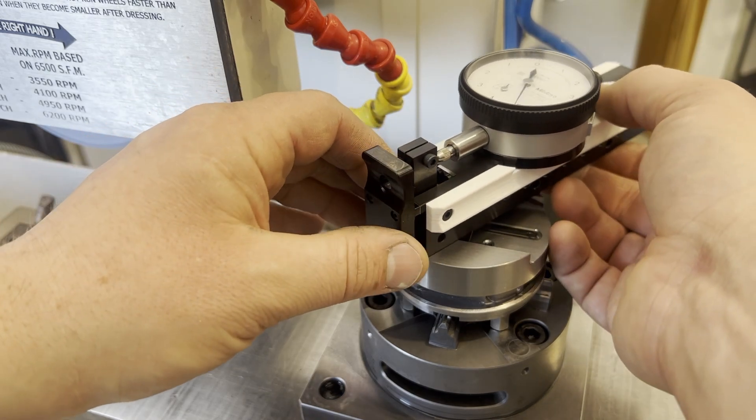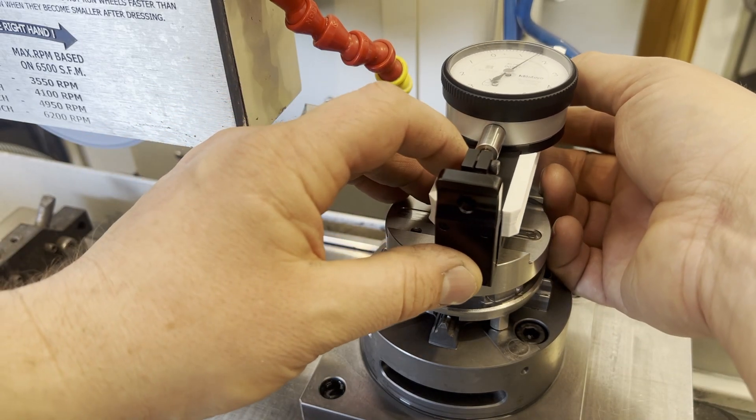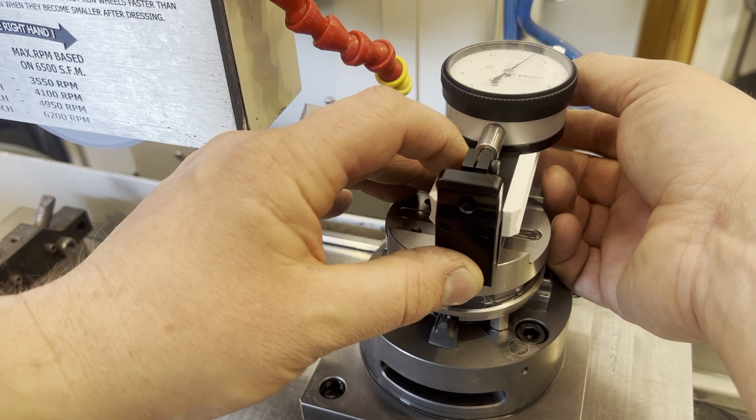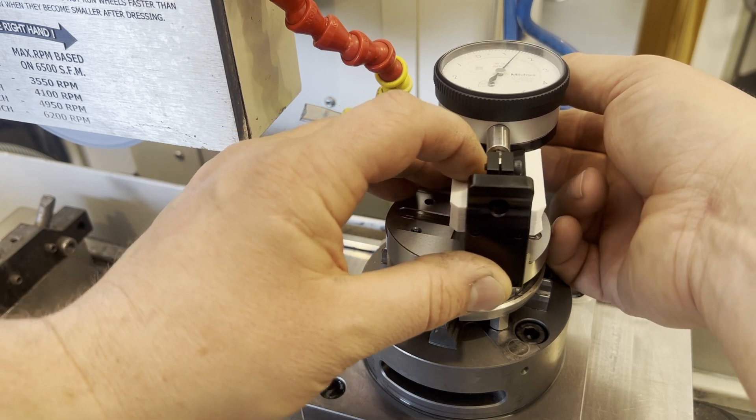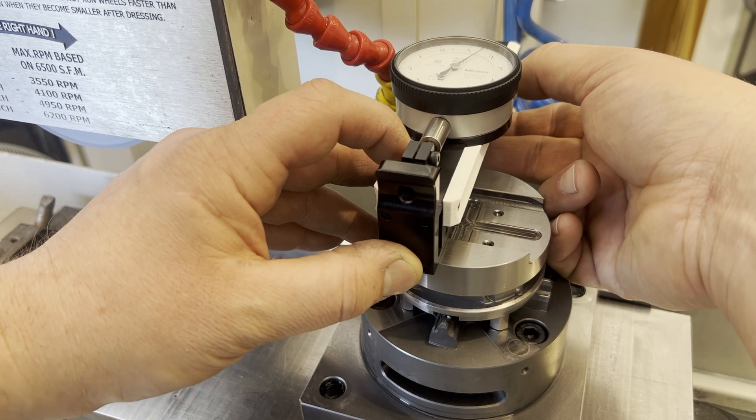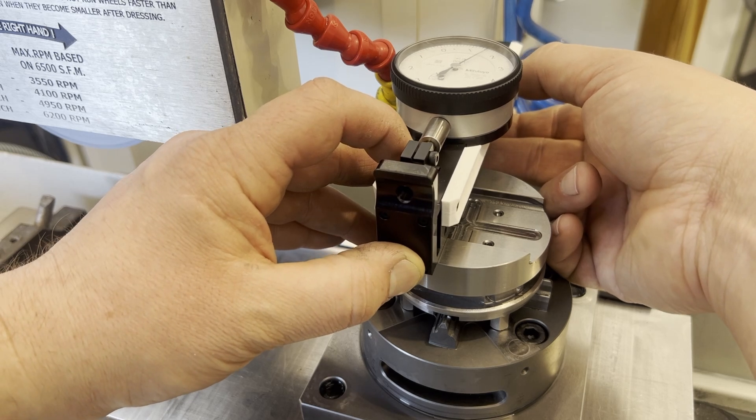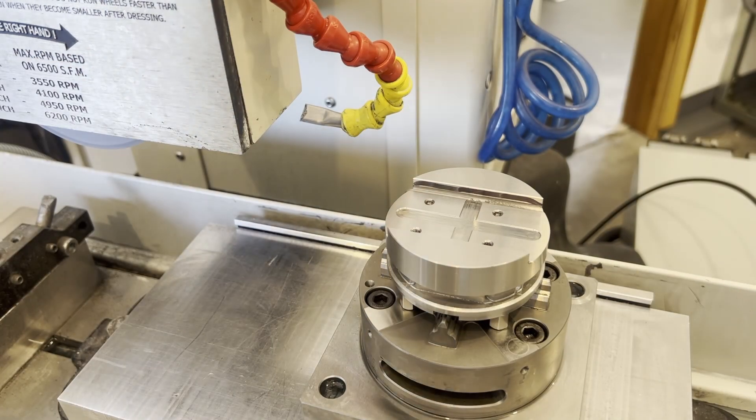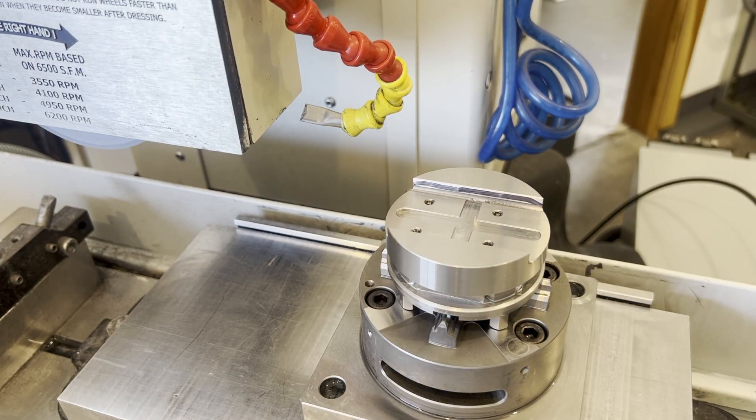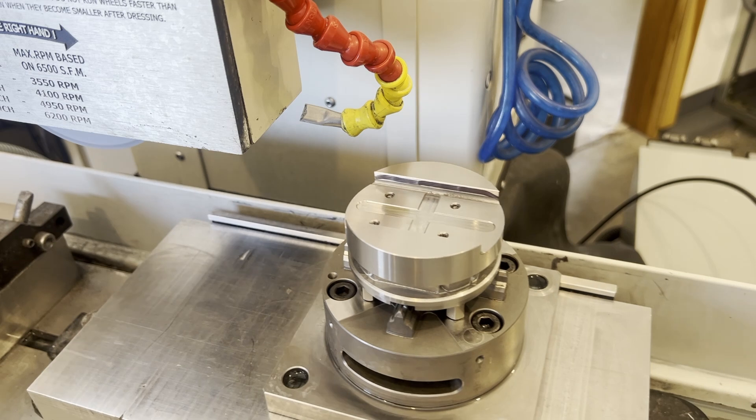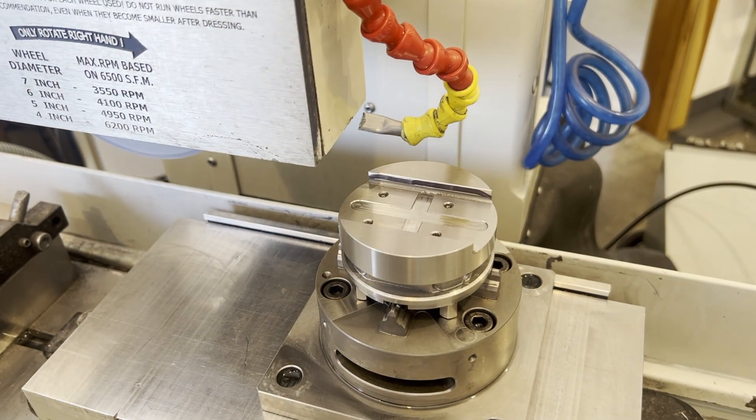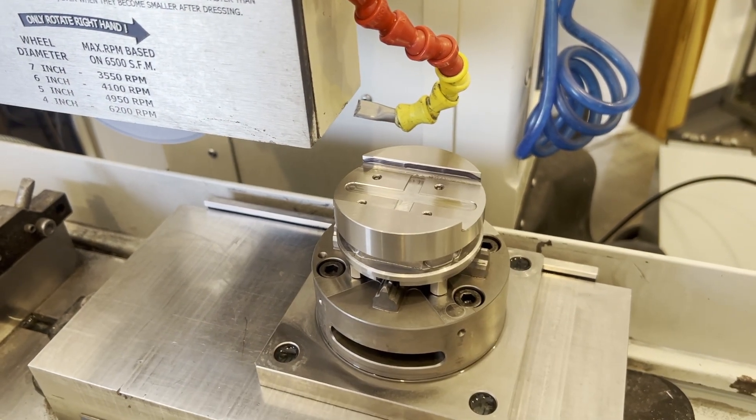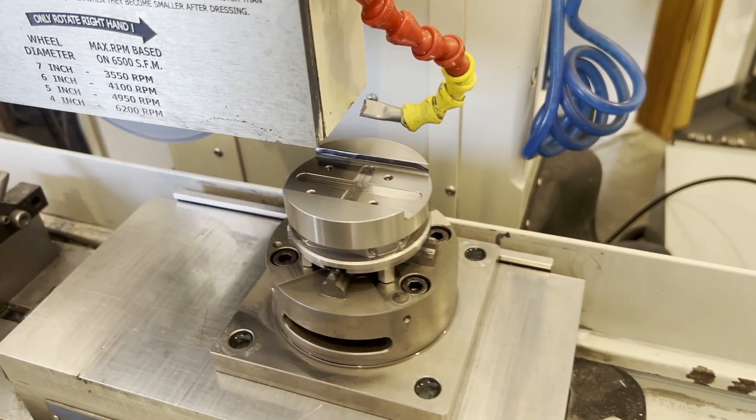If we measure, looks like we have about a thou and five tenths of material, and so we're going to take equal amounts off of either side of the slot. So let's say it's going to be seven and a half tenths coming off. So we'll grind the one side and then flip the pallet.